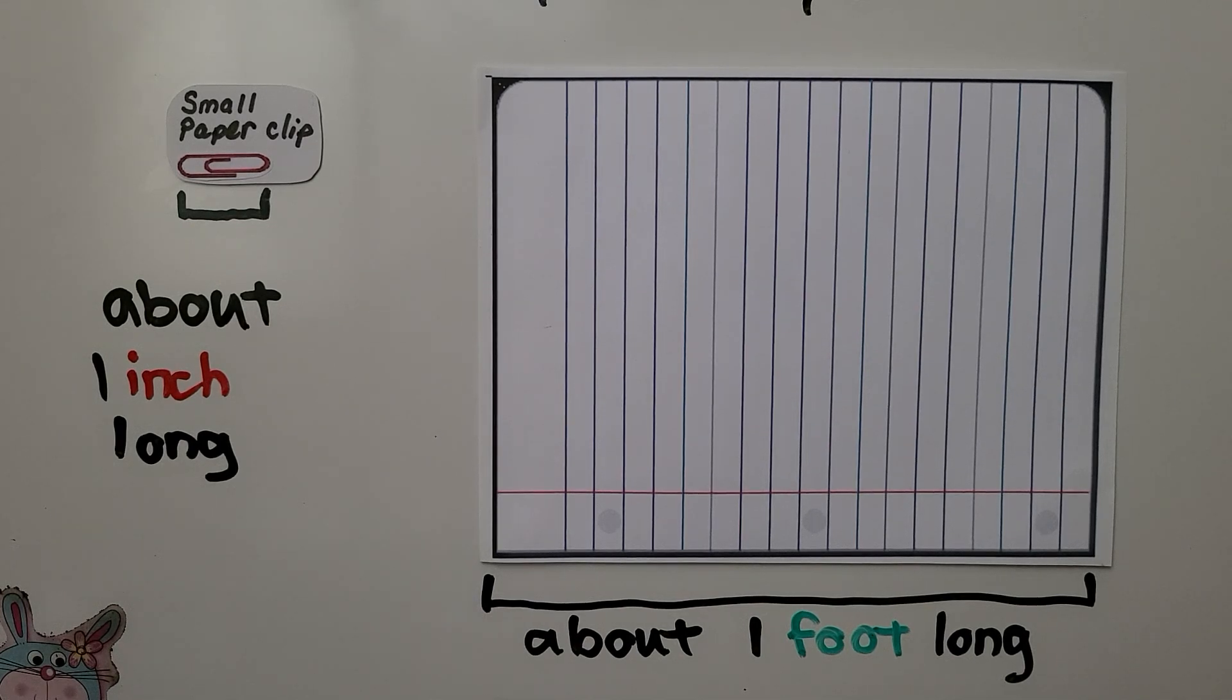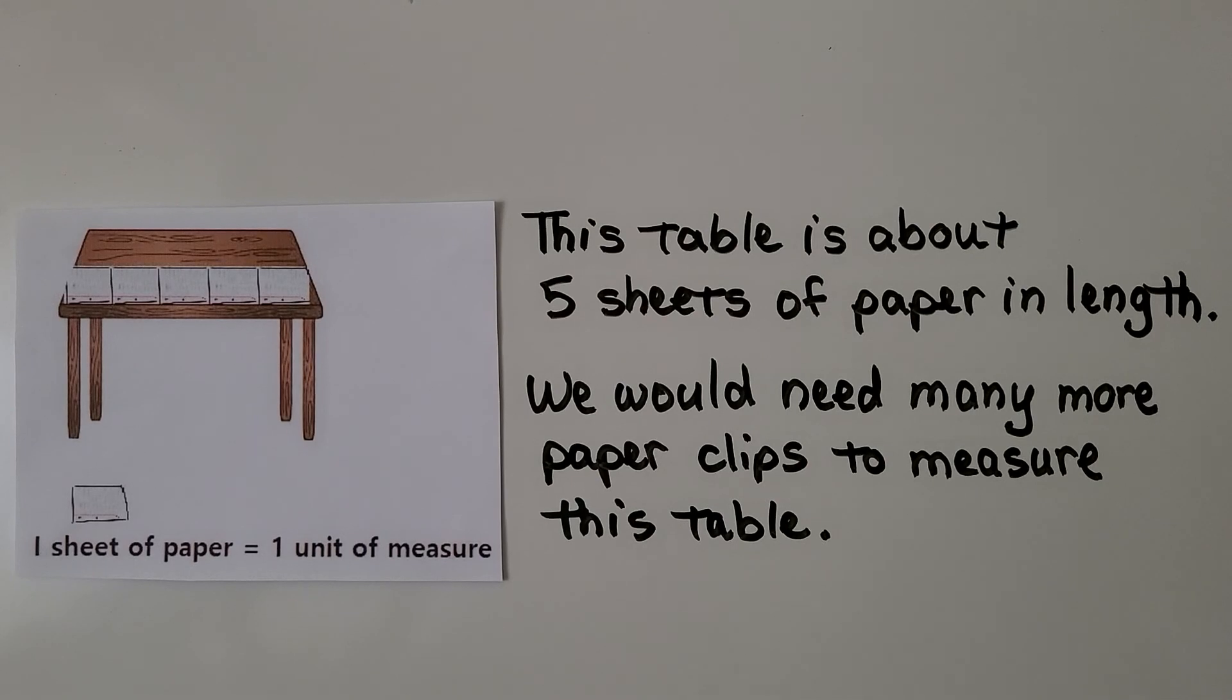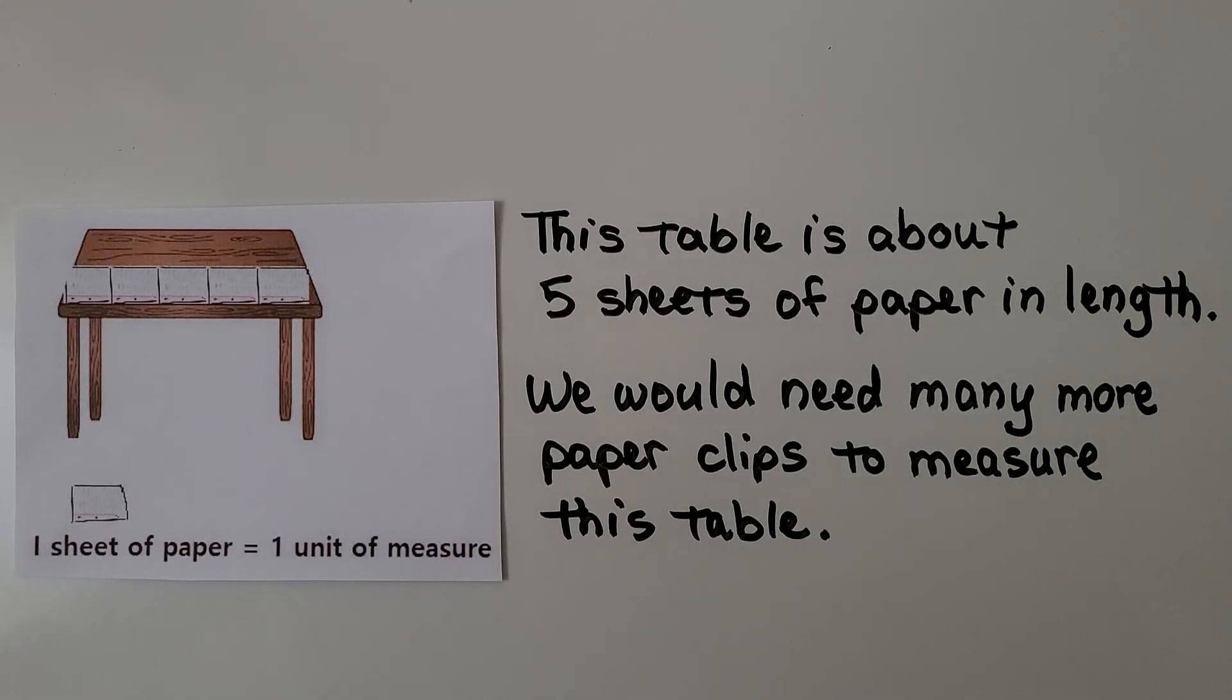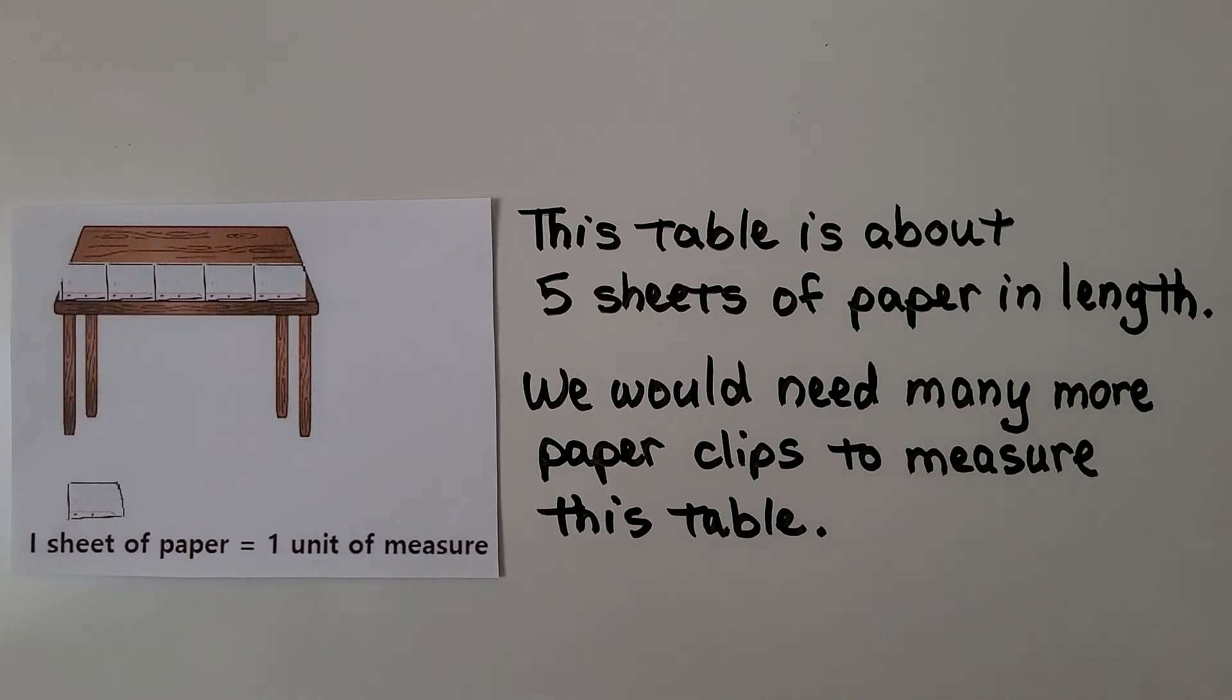We can think of a small paperclip as about one inch long. If we measured something in paperclips, that would be a non-standard unit. We can think of a sheet of school paper as about one foot long - about 12 inches. That would also be a non-standard unit. This table is about five sheets of paper in length, and we would need many more paperclips to measure this table.